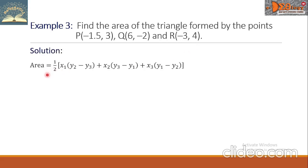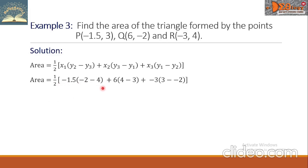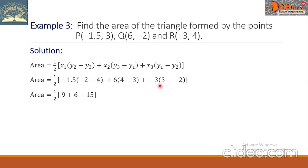We have the formula; let us substitute the corresponding values. We have one-half times: negative 1.5 times (negative 2 minus 4), plus 6 times (4 minus 3), plus negative 3 times (3 minus negative 2). Simplifying: negative 2 minus 4 is negative 6, times negative 1.5, that will be positive 9. 4 minus 3 is 1, times 6 is 6. 3 minus negative 2 is 5, times negative 3 is negative 15. So 9 plus 6 minus 15 is 0, and one-half of 0 is 0.